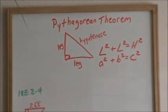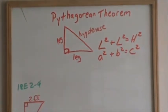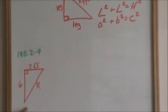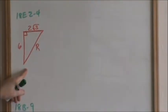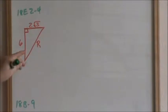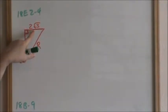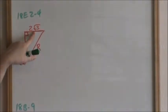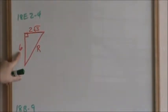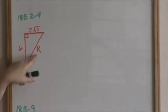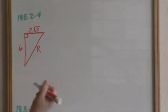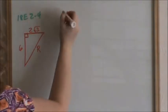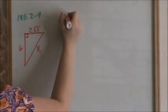Let's go to problem 18e — this will be problems 2 through 4. One leg is 2 times the square root of 3, one leg is 6, and we don't know the hypotenuse. Therefore, we use Pythagorean Theorem.